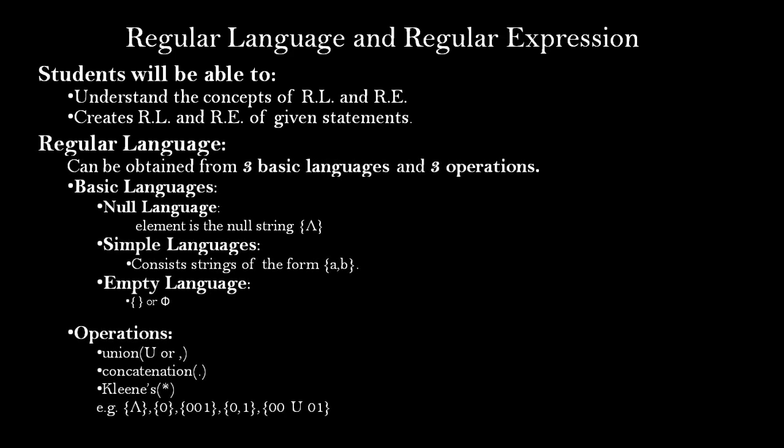Let's start with regular language. What is a regular language? A regular language is obtained from three basic languages and three operations. The regular language consists of two major components: first, three basic languages, and second, three operations. We will first discuss the three basic languages, then the three operations we implement on them.